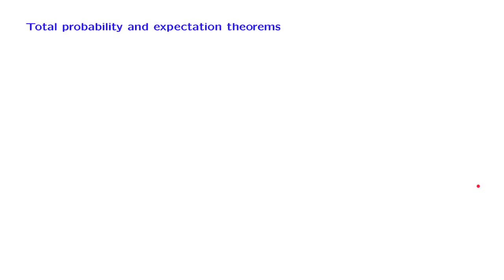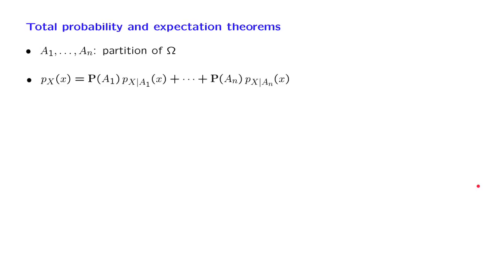For the case where we condition on events, we also developed a version of the total probability theorem and the total expectation theorem. We can do the same when we condition on random variables. Suppose the sample space has been partitioned into n disjoint scenarios. The total probability theorem tells us that the probability of the event that random variable X takes on a value little x can be found by taking the probabilities of this event under each possible scenario, and weighing those probabilities according to the probabilities of the different scenarios.